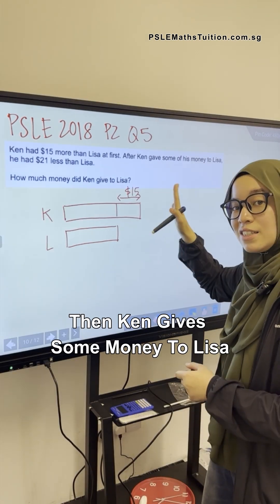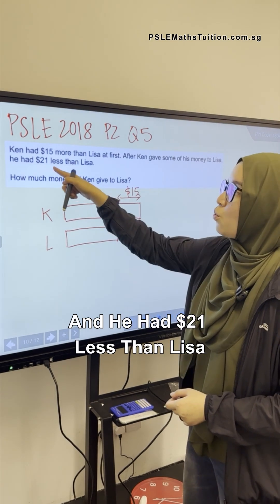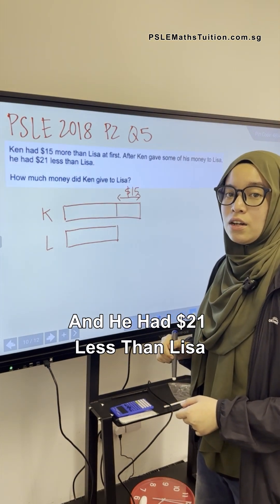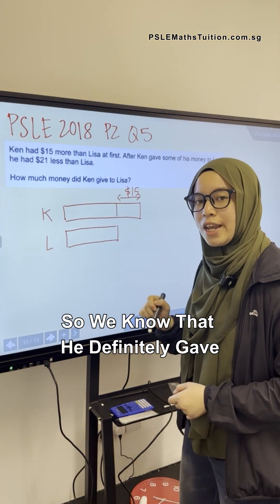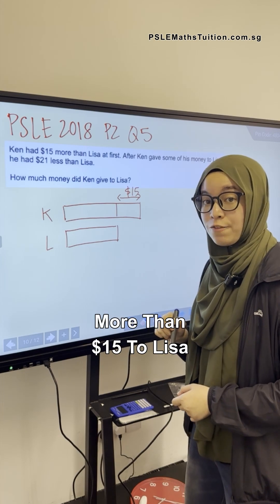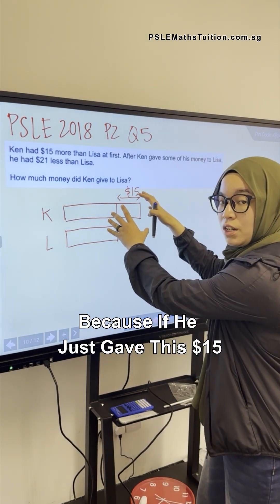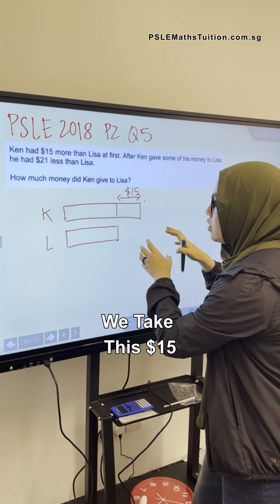Then Ken gives some money to Lisa, and he had $21 less than Lisa. So we know that he definitely gave more than $15 to Lisa, because if he just gave this $15,